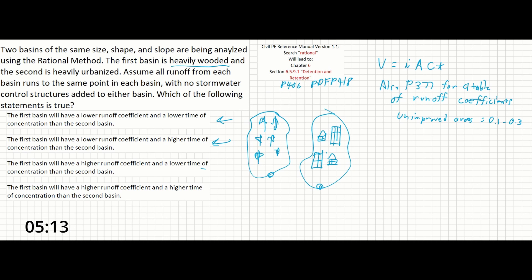This problem is as straightforward as that where we can see that the first basin is going to have a lower runoff coefficient and a higher time of concentration than would an identical second basin that is much more urbanized.